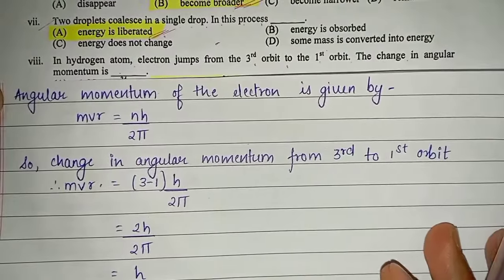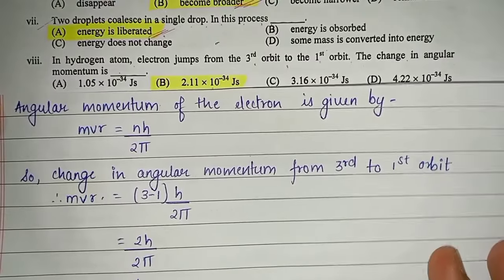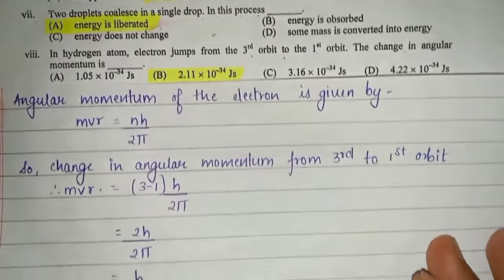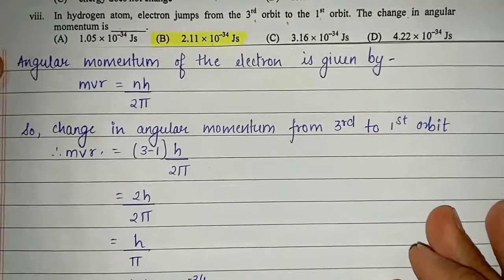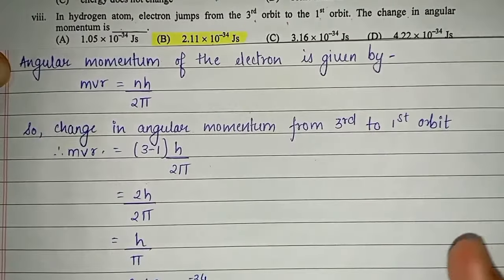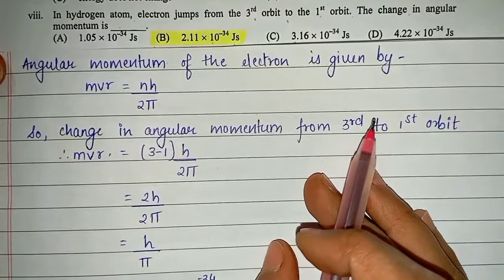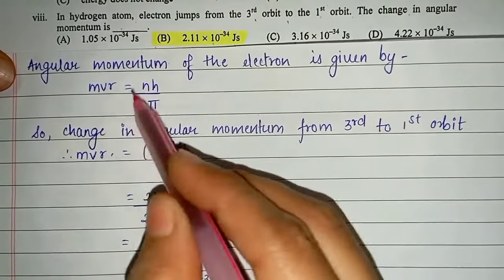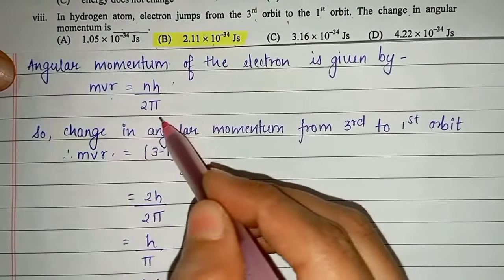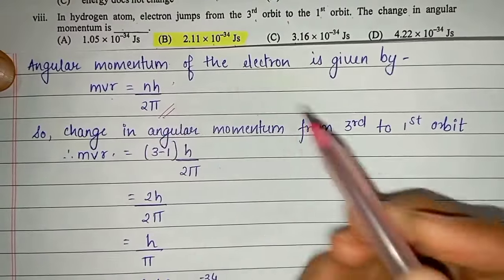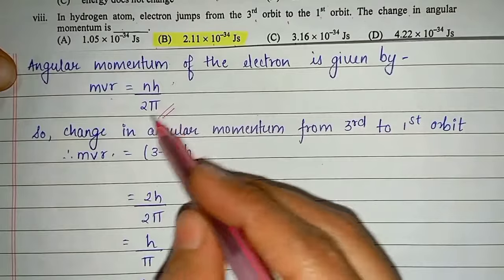The change in angular momentum of a given electron is given by mvr = nh/2π.